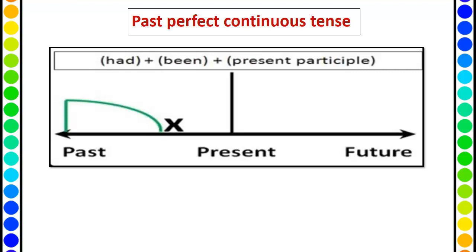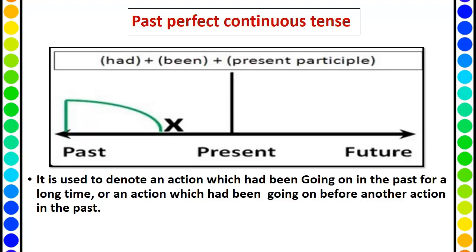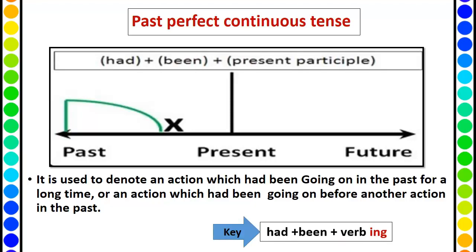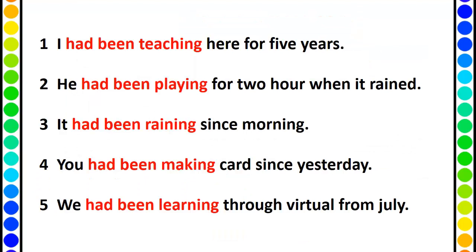Now past perfect continuous tense. It is used to denote an action which had been going on in the past for a long time, or an action which had been going on before another action in the past. The key words are 'had been' plus the 'ing' form. Examples: I had been teaching here for five years. He had been playing for two hours when it rained. It had been raining since morning. You had been making cards since yesterday. We had been learning through virtual from July. Notice the time periods: for five years, for two hours, since morning, since yesterday, from July — the time period is always given, showing the action started in the past.